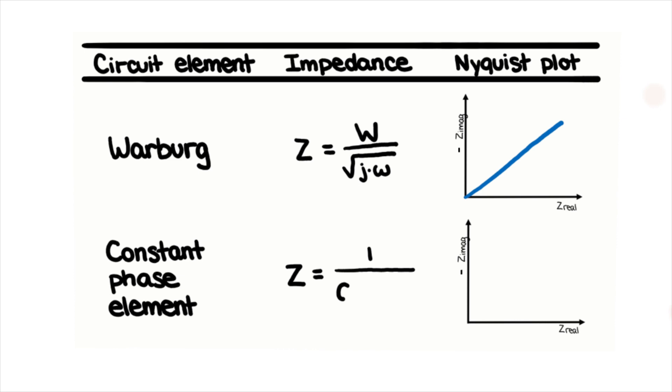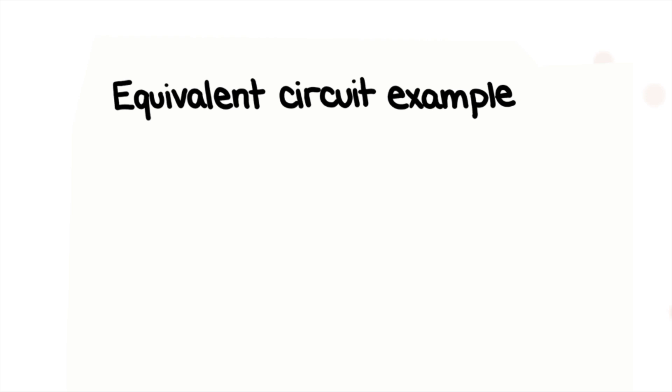The last shown here is the constant phase element, which can describe non-uniform properties in real electrochemical systems. It is similar to capacitance, but with an exponential dependence. It is also linear on a Nyquist plot. It generally represents distribution of elements.